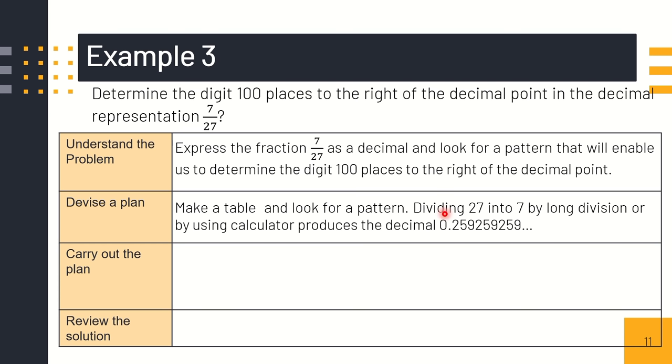Dividing twenty-seven into seven by long division or by using a calculator produces the decimal 0.259259259. As you can see and observe, it repeats over and over. Starting with 2, 5, 9. After 9, it returns to 2, 5, 9. So this is the pattern of our decimal. Here we have nine decimal places. So the ninth decimal place is nine.